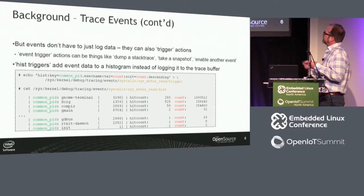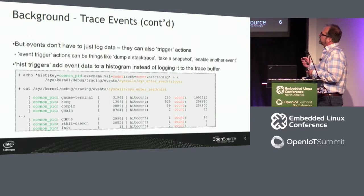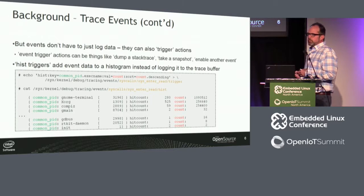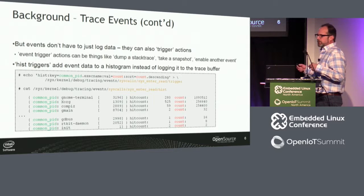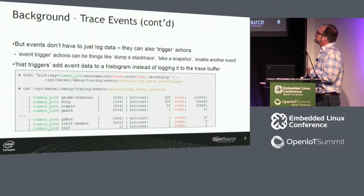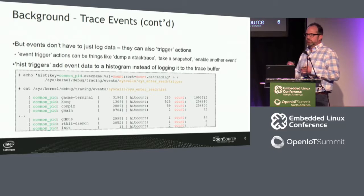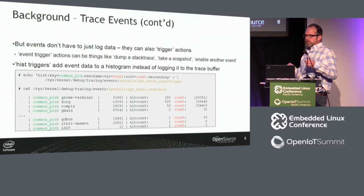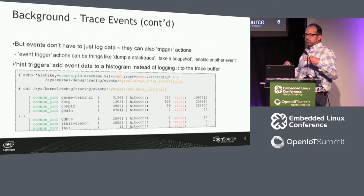But that's not the only thing that can happen when an event's triggered. It can actually trigger other things — for instance, dumping a stack trace, which shows you the call trace leading up to whatever event you're interested in. Another action is taking a snapshot: you can enable every single event in the system, and when the event of interest hits, it takes a snapshot of the trace buffer, giving you a really detailed idea of what led up to that event.